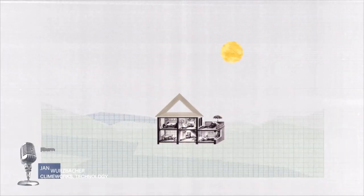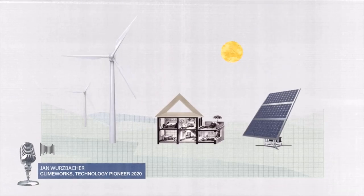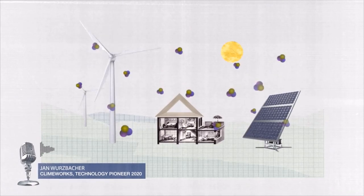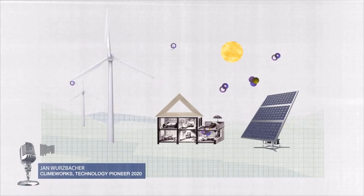For climate change it's really important to switch to renewable energies but on top of that we need to remove about 15 gigatons of CO2 from the atmosphere every year by mid of the century.